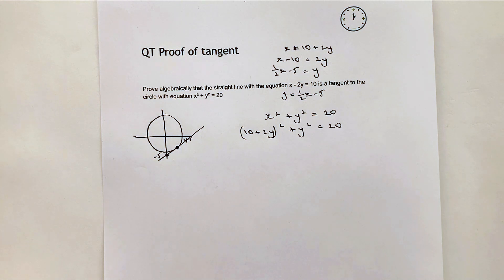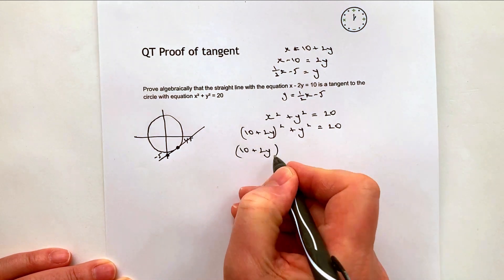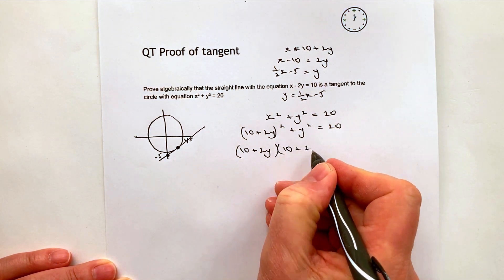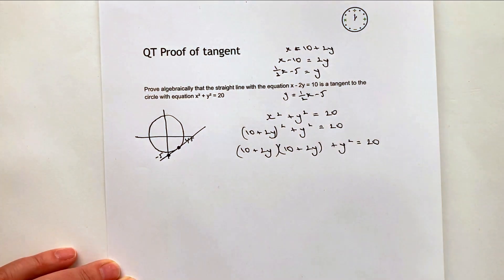In this particular case, I'm going to expand this out. I'm going to get (10 plus 2y) multiplied by (10 plus 2y) plus y squared equals 20. Now at the moment, it seems a little bit scary, but hopefully it'll work out.